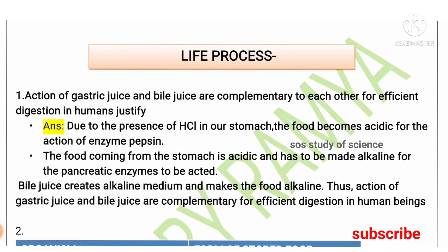The first question: the action of gastric juice and bile juice are complementary to each other for efficient digestion in humans — justify. Both gastric juice and bile juice play a very important role in the process of digestion of food. Gastric juice, present in the stomach, helps in killing microorganisms and it also activates the enzyme called pepsin.